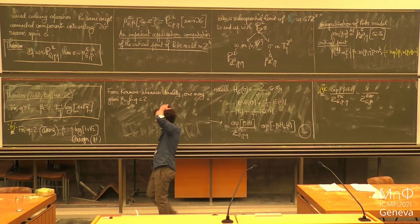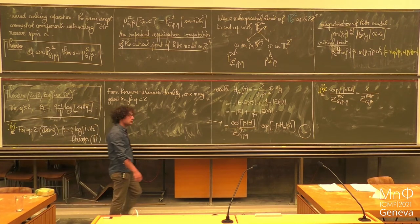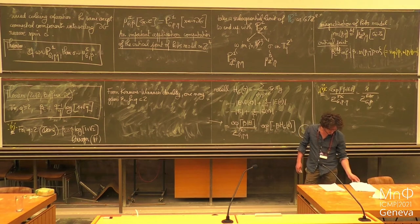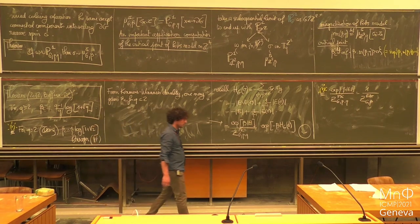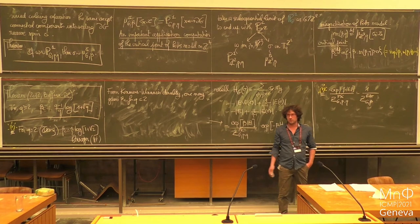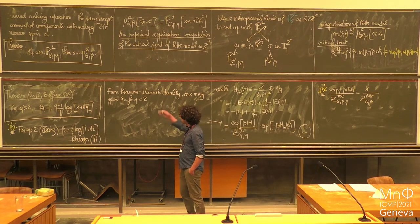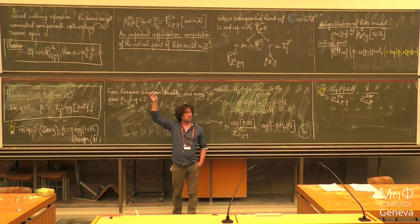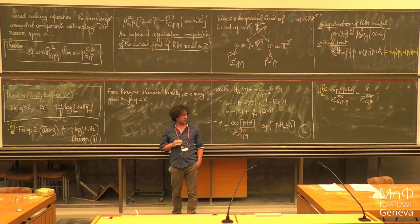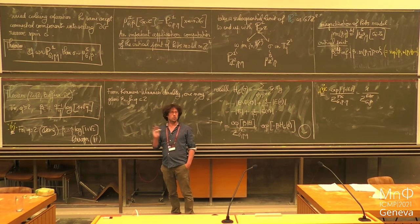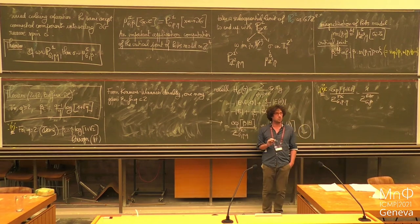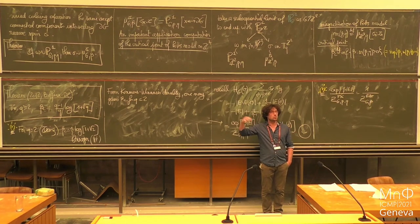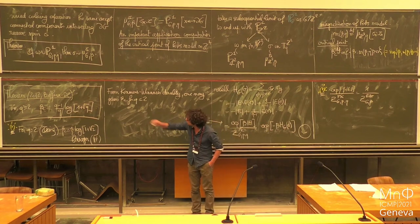What I'm going to explain is that while the Potts model doesn't have a duality for Q larger than 2, FK percolation does for every Q. There is a notion of duality which is very natural for FK percolation, and it holds for every Q. This is going to allow us to guess that the critical point of FK percolation equals a certain thing, and that will translate into the result for the Potts model.